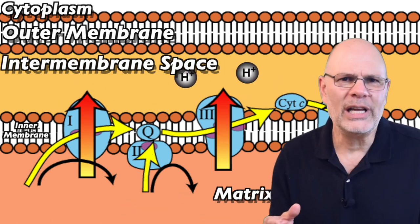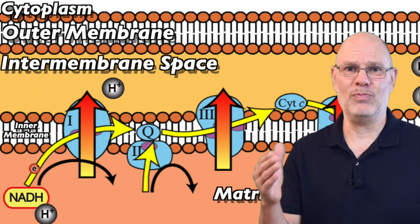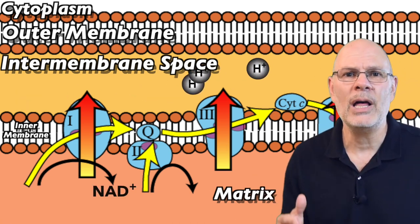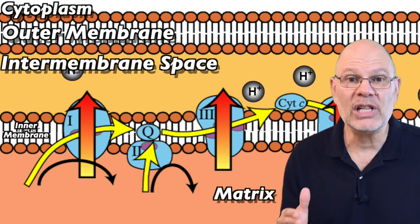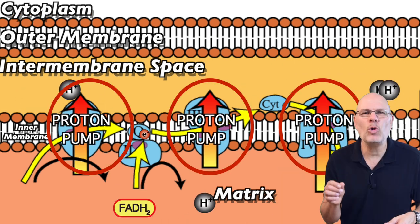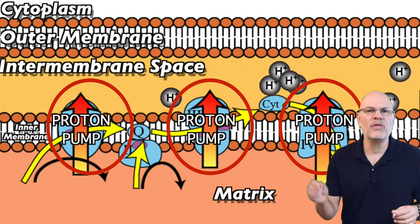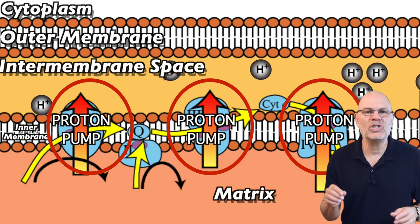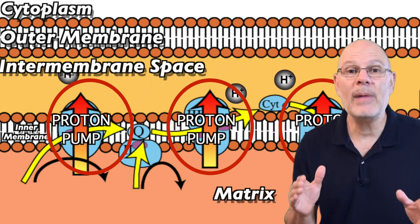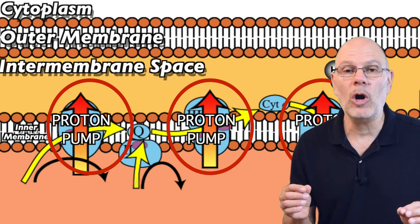We use electricity to light lights and to power computers, motors, radios, etc. The mitochondria use this electricity to power proton pumps. These pump protons from the matrix to the intermembrane space.